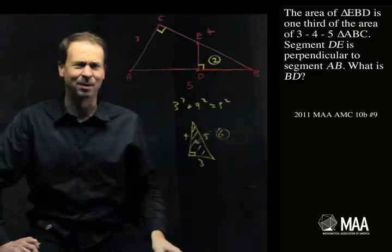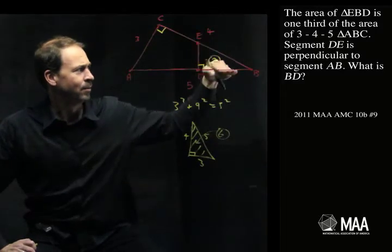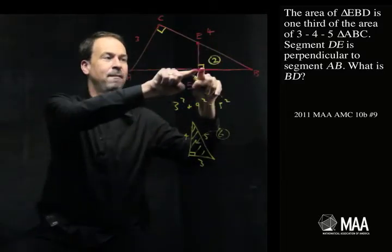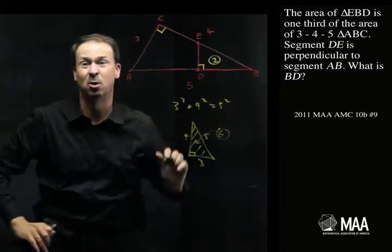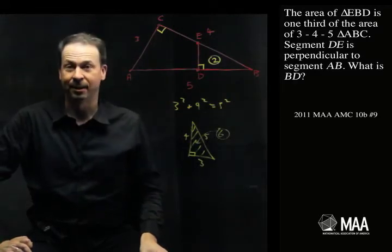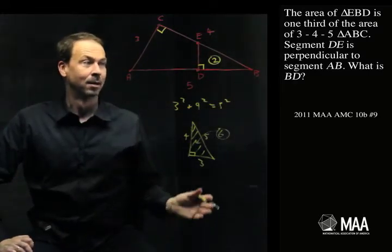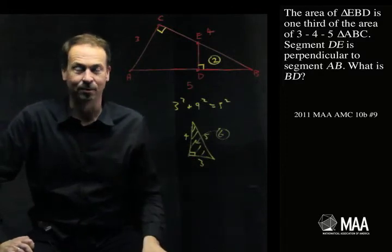Actually, what was the question again? I have to reread the question. Information, information, information. Oh, what is BD? I'm trying to find this length. Alright, but I know an area. What else could I do? Well, let's just keep listing more things I know. Pictures of triangles. What I know about triangles.